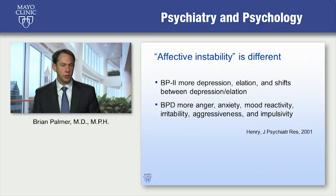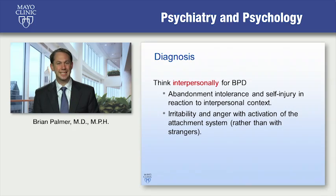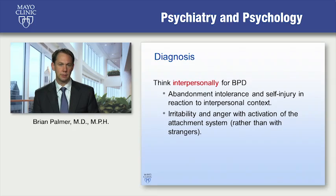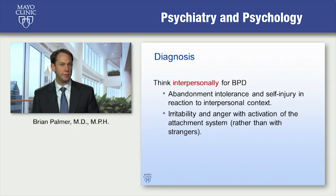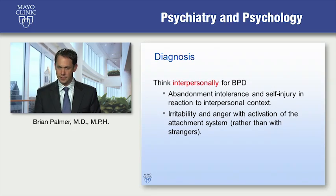The key feature in distinguishing these two disorders is context. Thinking interpersonally for borderline can really help the clinician understand the difference. Abandonment intolerance and self-injury in reaction to the interpersonal context are key discriminating features for borderline, as is irritability and anger with activation of the attachment system rather than with strangers. For bipolar, thinking about periods of sleep-deprived energy enhancement as well as elation or cycling mood disorder related to life stressors can be critical.